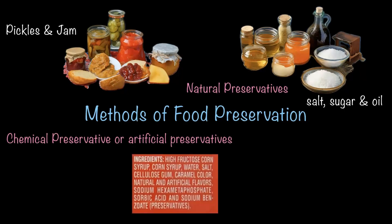Then there are chemical or artificial preservatives. You might have noticed these on the labels of packaged food. For example, if you buy a tetra pack of fruit juice, you'll often see a list of chemicals on the label — those are artificial preservatives. Some products even proudly claim 'no artificial preservatives.' These preservatives prolong the food's shelf life by preventing internal rotting or decaying.